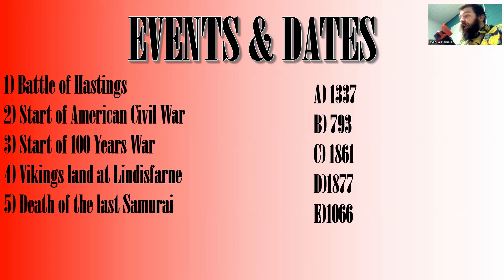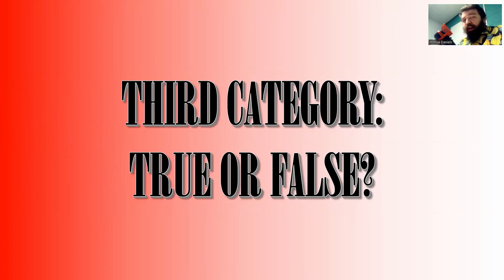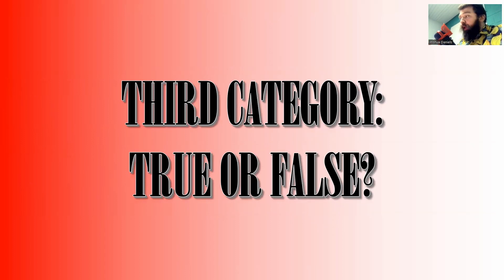That's the end of the second category. Moving on to the third category: True or False. Very simple — there will be five historical statements and you just have to answer whether they are true or false. 15 seconds per question, one point for every correct answer.